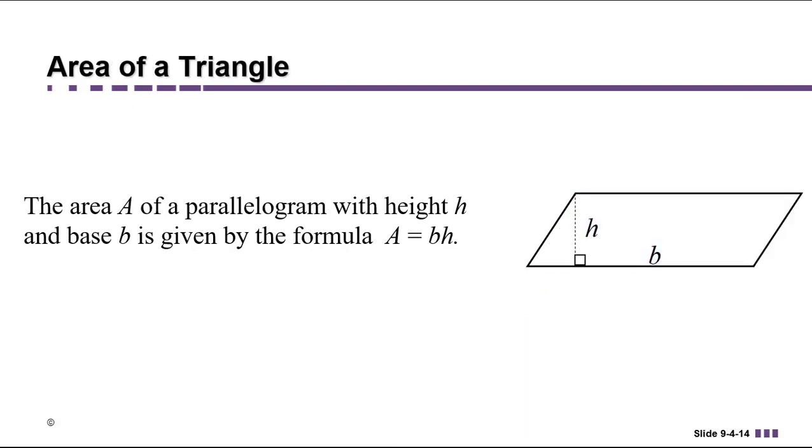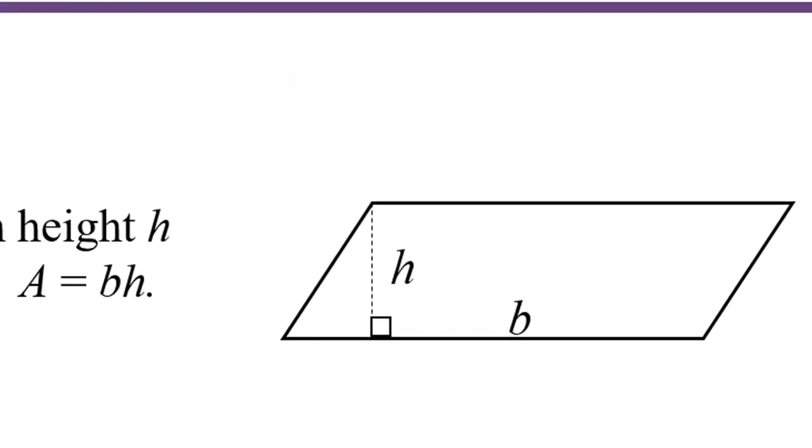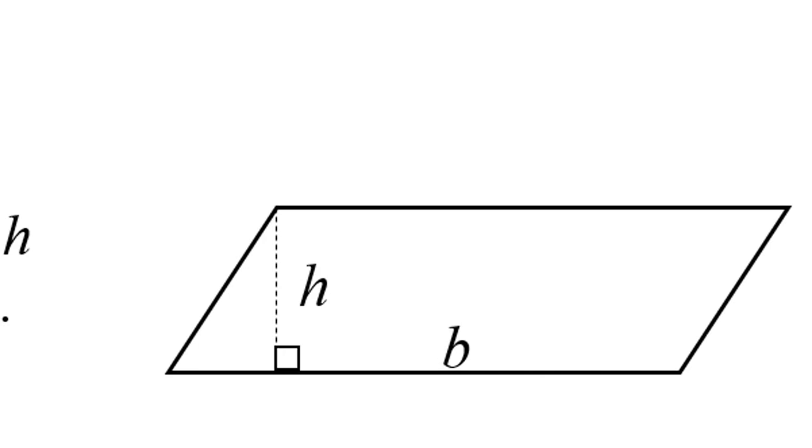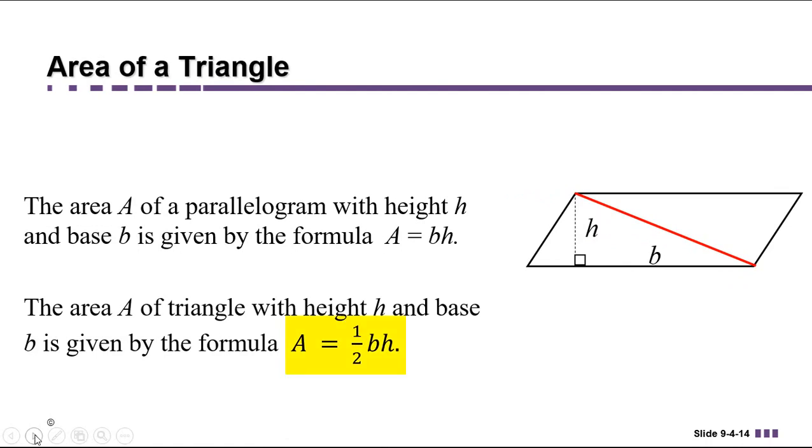We can also find the area of a triangle now that we know how to find the area of a parallelogram. Take this parallelogram, for example. We know that its area is the base times the height. Now imagine cutting this parallelogram in half. You get a triangle with half of that area. So the area of this triangle is one-half the base times the height. This formula works for any triangle.